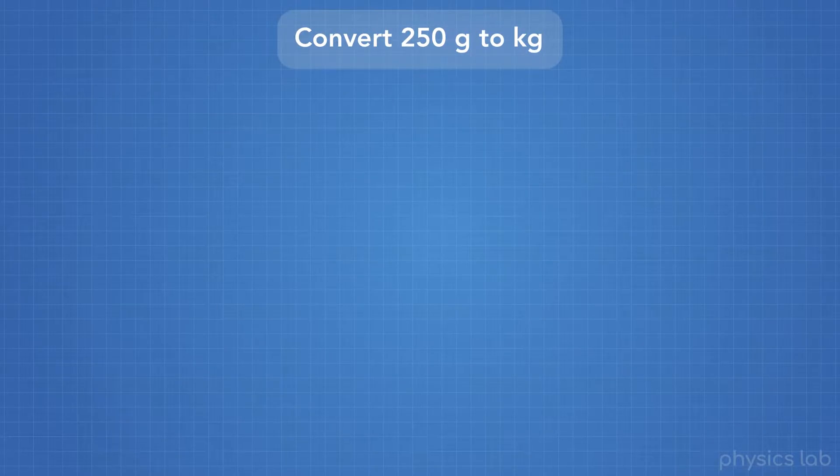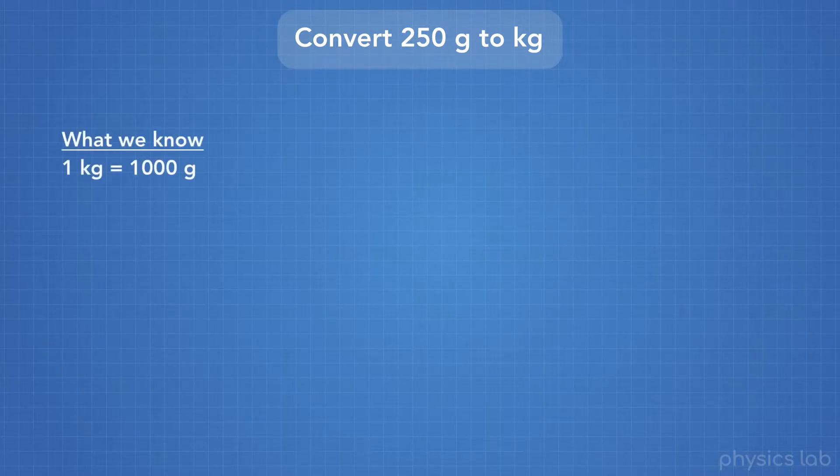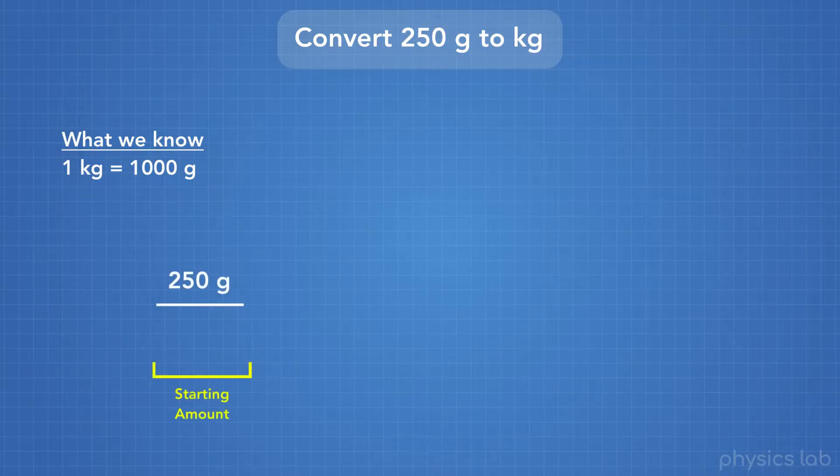Okay, so let's try an example of converting between units with prefixes. Let's convert 250 grams to kilograms. We know that 1 kilogram equals 1,000 grams from our table. And so first, we'll write our starting amount, 250 grams.